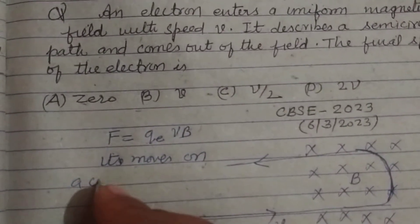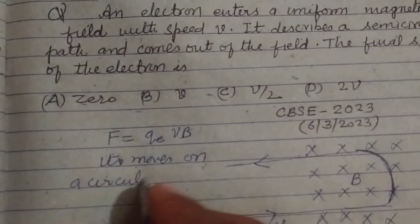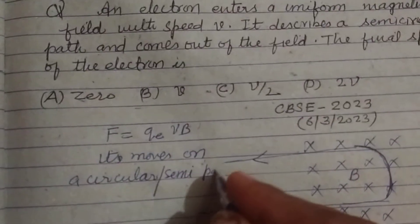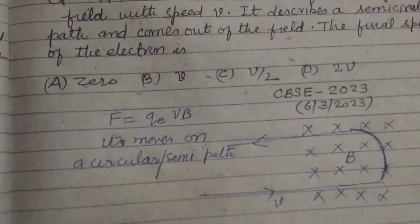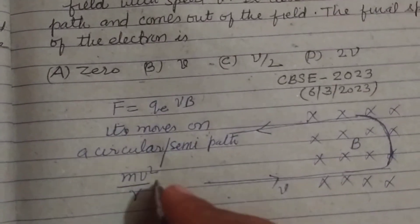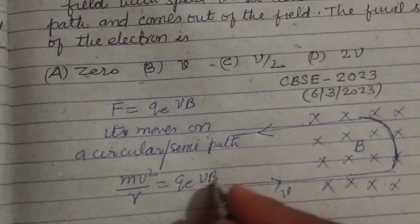On a semicircular path, it also experiences a centripetal force, that is mv²/r = qevB.